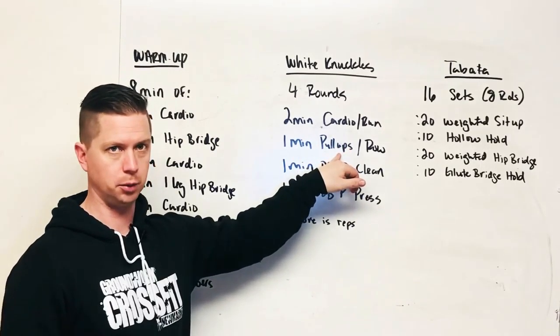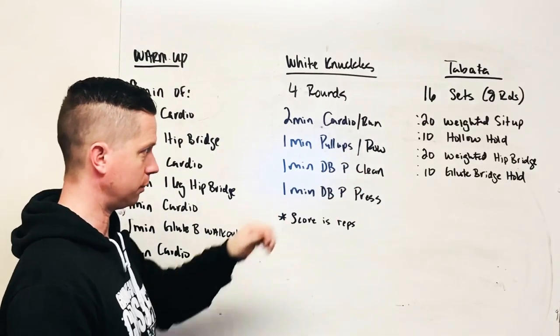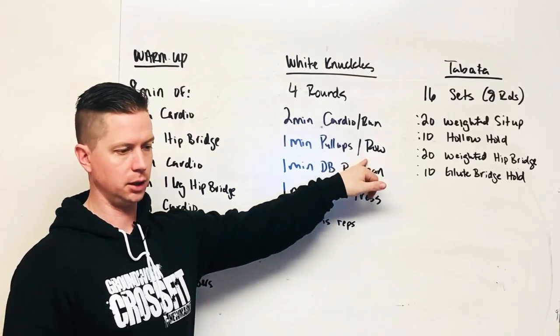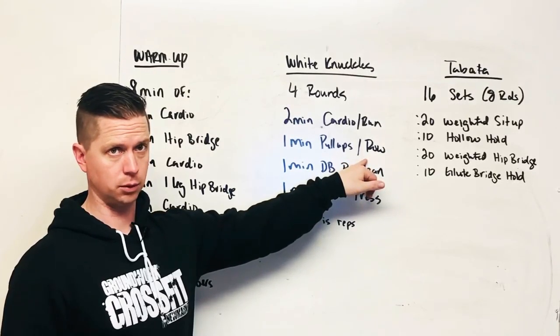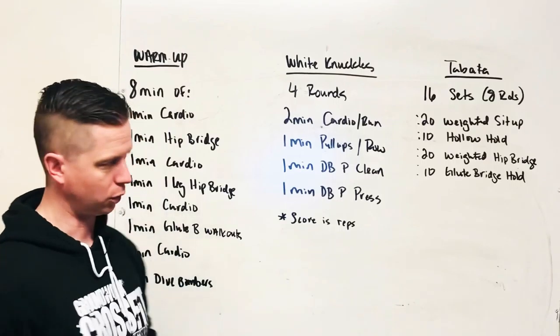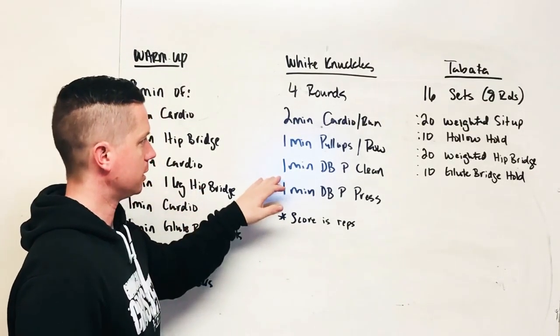If you don't have the option to do pull-ups, we could do a TRX row if you have that, or if you don't have a setup for pull-ups or for rowing, we can just do a bent over row with an object or with dumbbells.